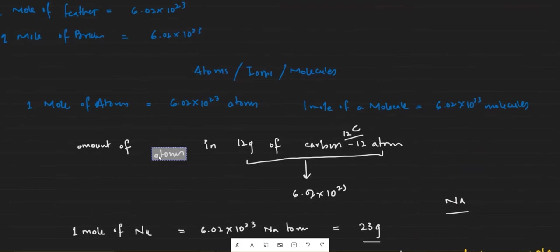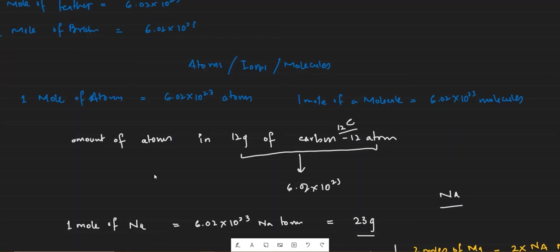Just remember: as far as understanding the mole is concerned, one mole of anything is equal to the amount of substance present in Avogadro's number of those particles. For instance, one mole of cushions would be Avogadro's number of cushions — but we don't use moles to measure macroscopic things. We use moles to measure the amounts of microscopic things.